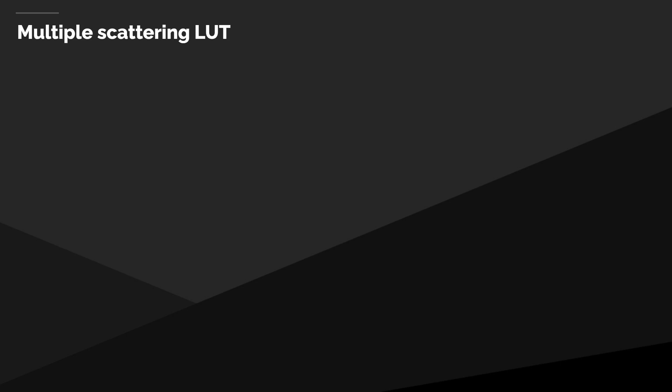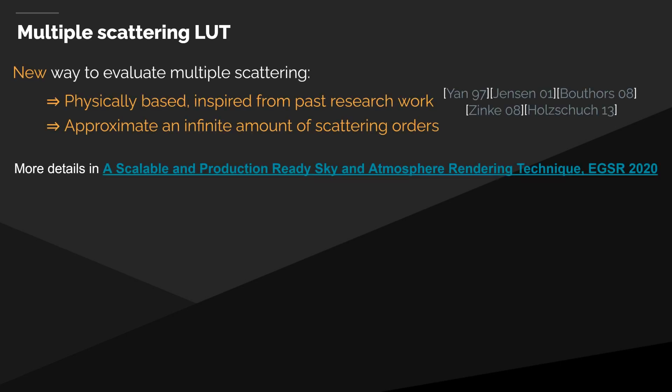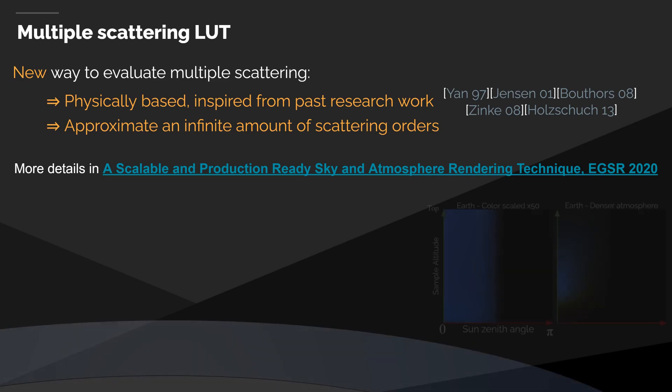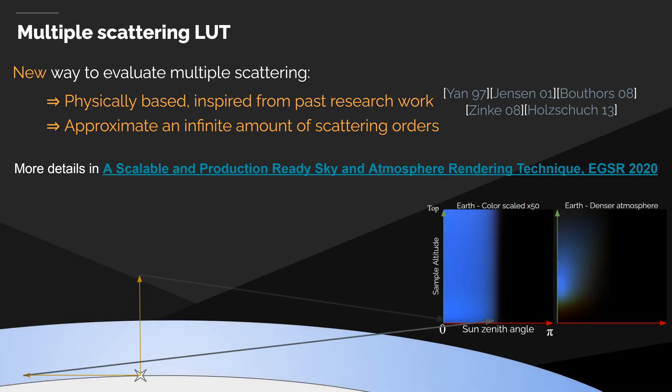The evaluation of the luminance resulting from multiple scattering is simplified by gathering ideas from previous work in light transport papers for participating media and hair rendering, adapted to atmospheric rendering. Our physically-based approach can approximate the evolution of an infinite number of scattering orders. Please refer to our EGSR paper for more details. In short, we end up with a two-dimensional lookup table storing the isotropic multiple scattering contribution, which can be created for any sample within the atmosphere.